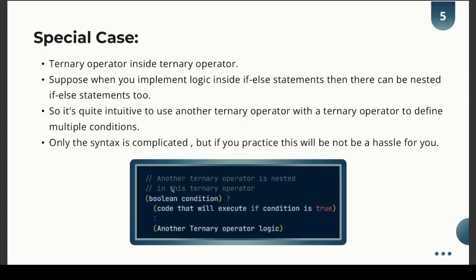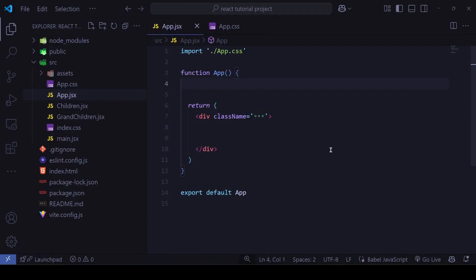If the boolean condition is true, you can place any component or logic there, and then another ternary operator in the else condition. With practice, nested ternary operators won't be confusing anymore. Now we will see the ternary operator in practice.